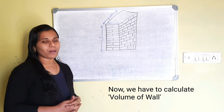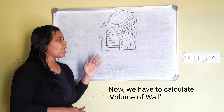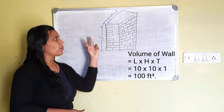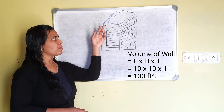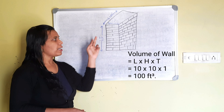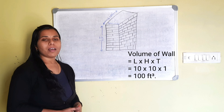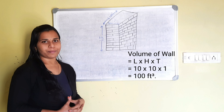Now we have to calculate the volume of the wall. Volume of wall equals length into height into thickness. Therefore, 10 feet x 10 feet x 1 foot gives us 100 cubic feet.